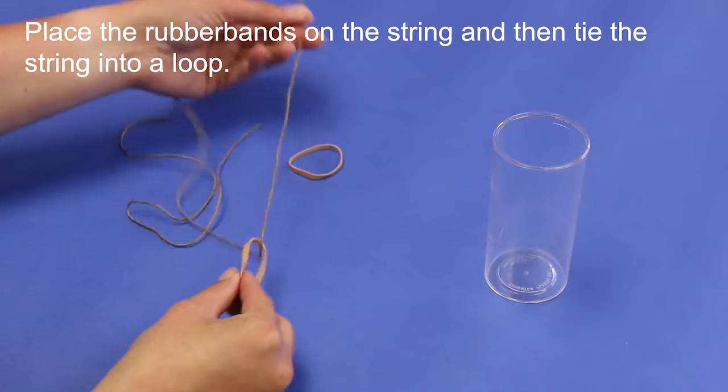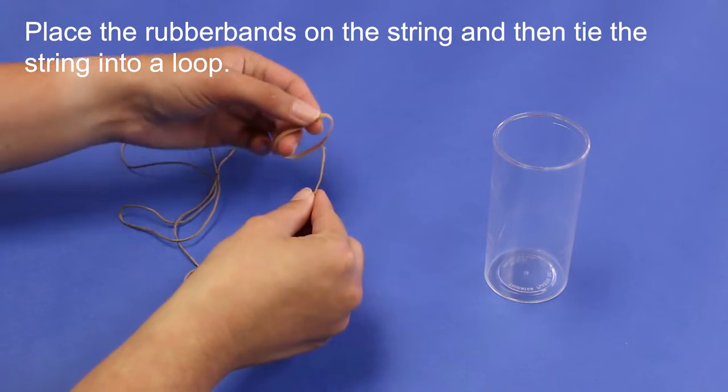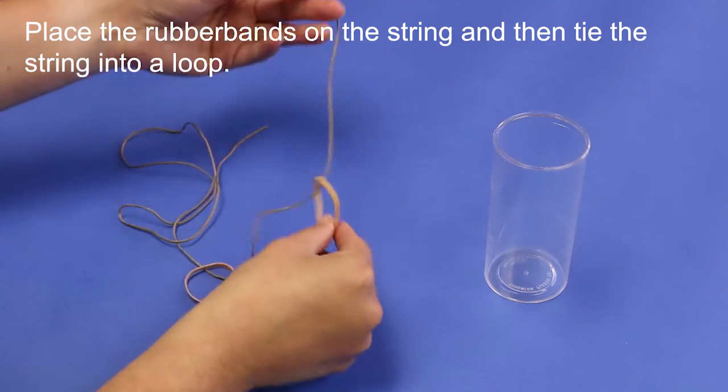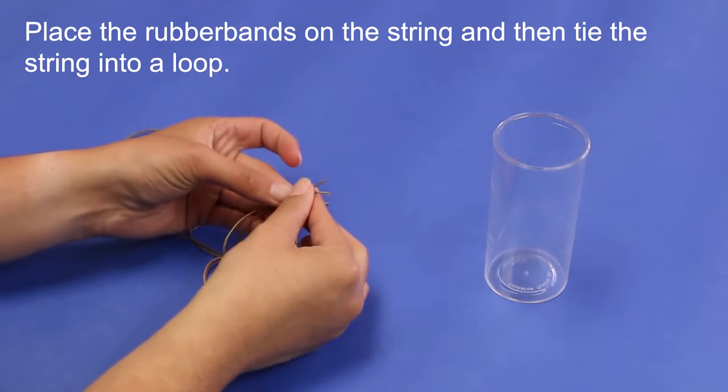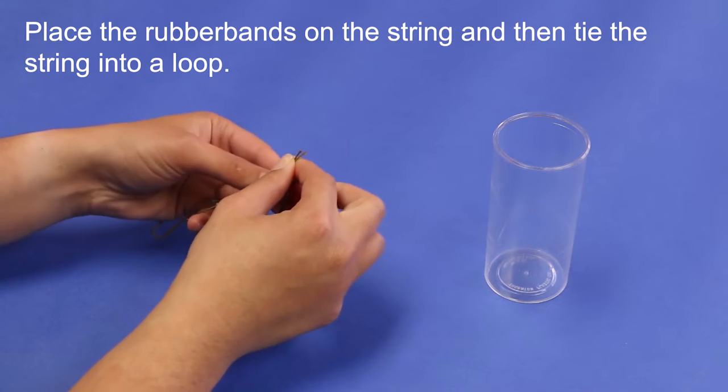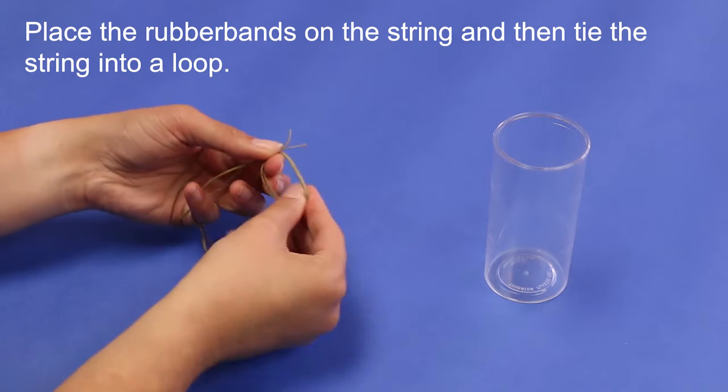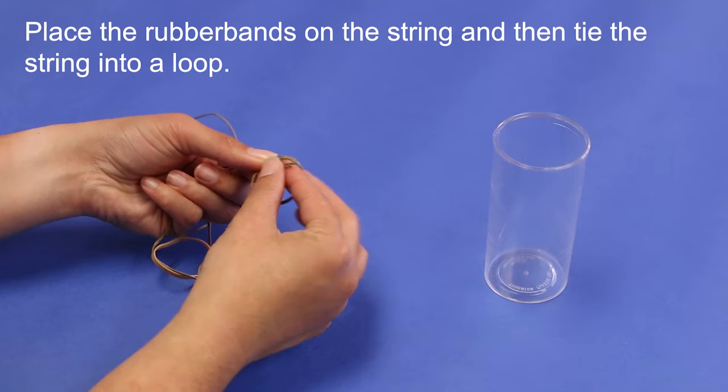Feed the rubber bands onto the string, and then tie the string into a loop. The easiest way to do this is to place the two ends together, make a loop, and feed the ends through the loop. This single knot is all that's needed.